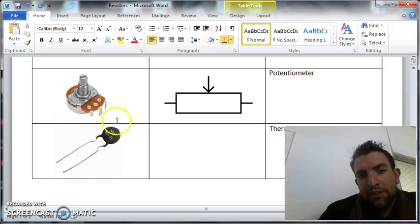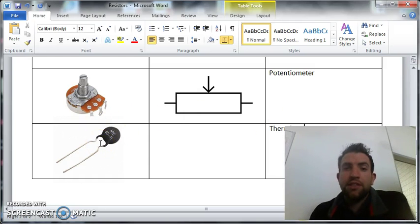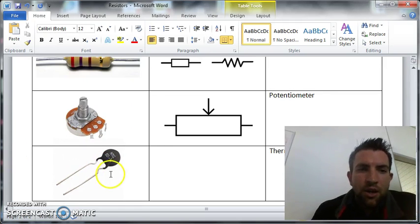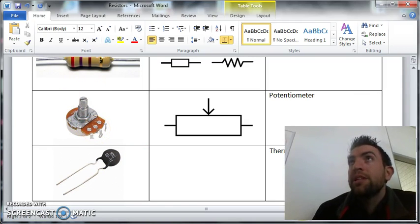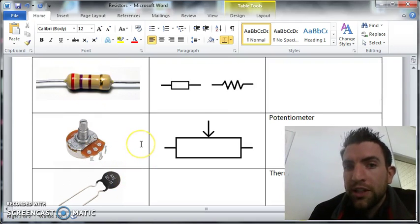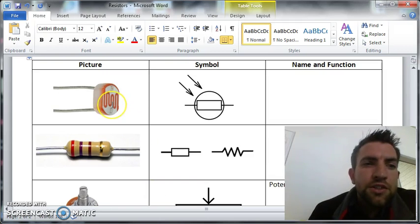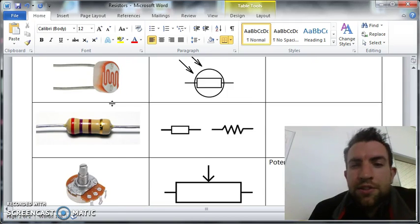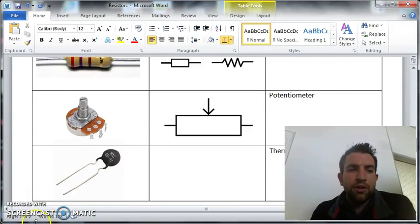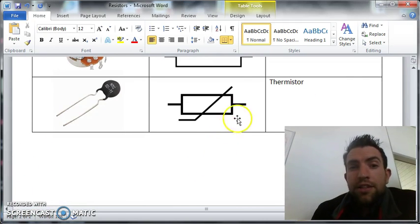The thermistor changes based upon heat, whereas the potentiometer value changes based upon turning that dial - like the speed of fan switches or volume controls. The LDR is a resistor where resistance rises or falls based upon light levels. This is the simple symbol for the thermistor - just two lines straight through it.